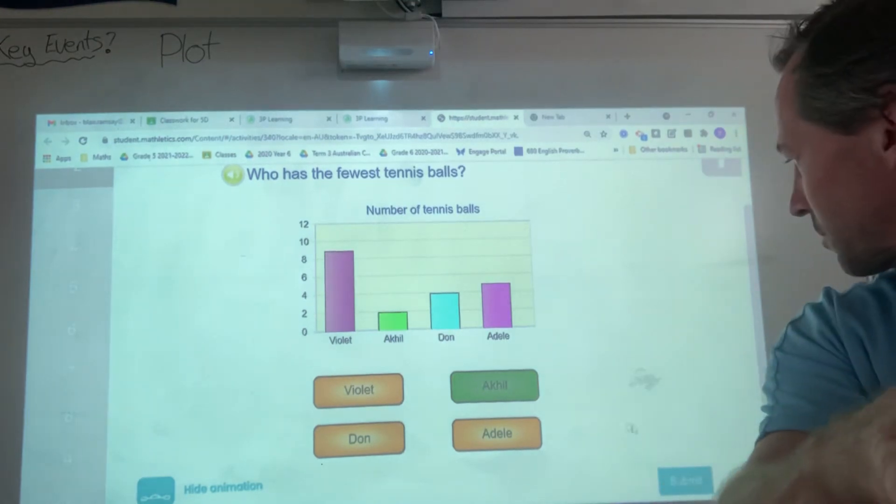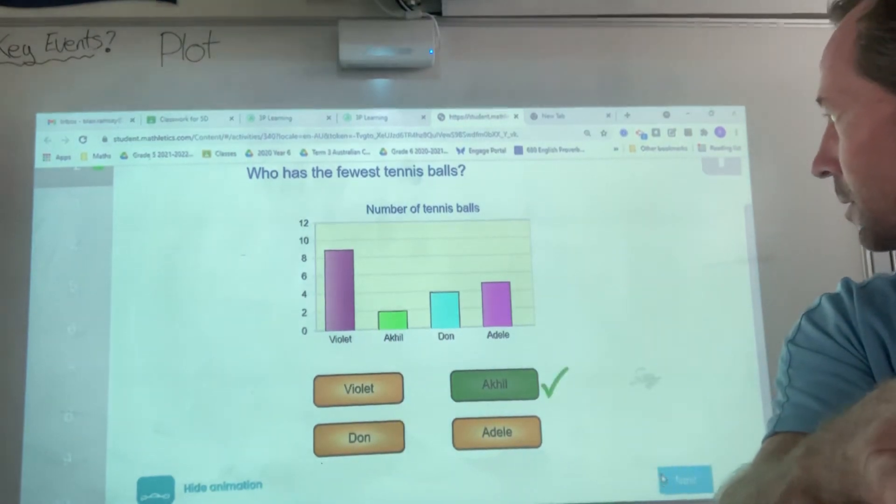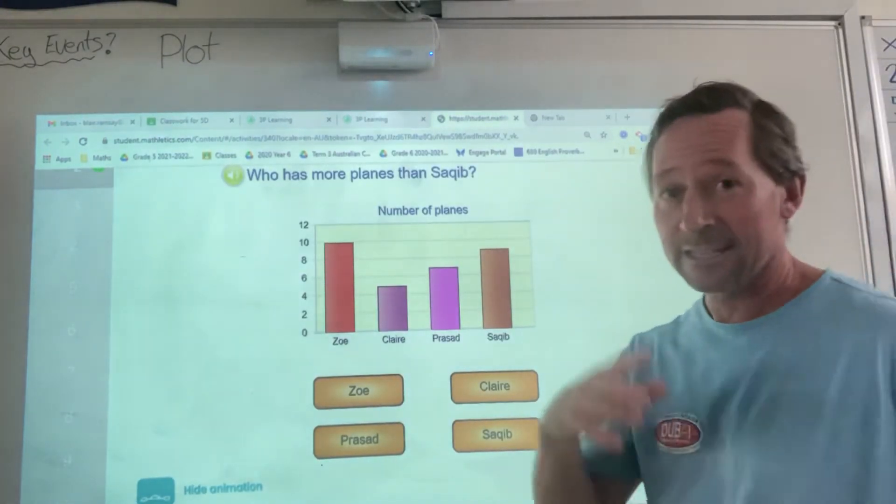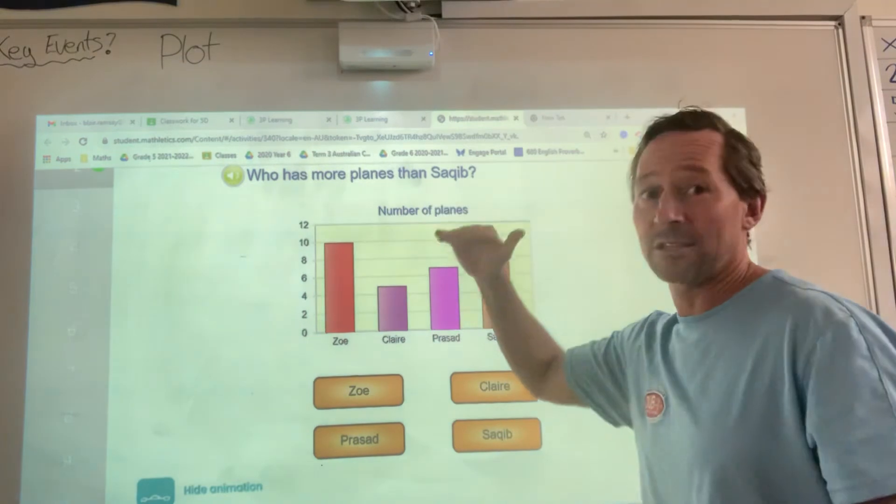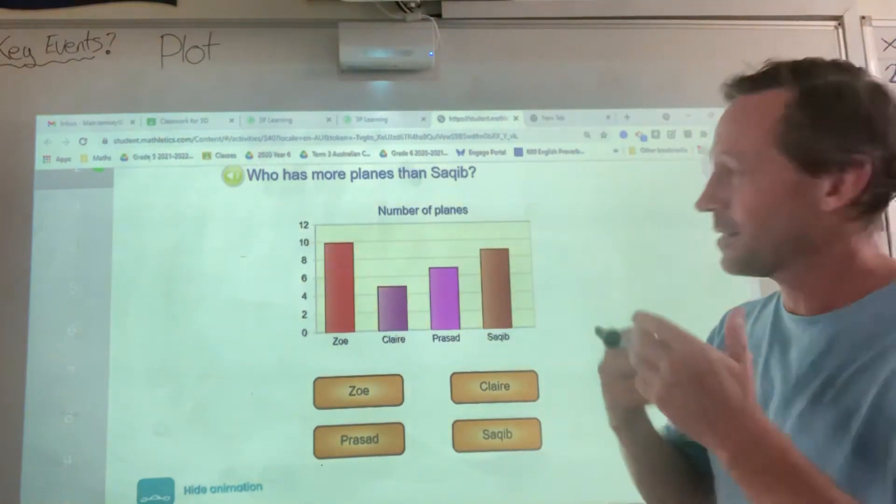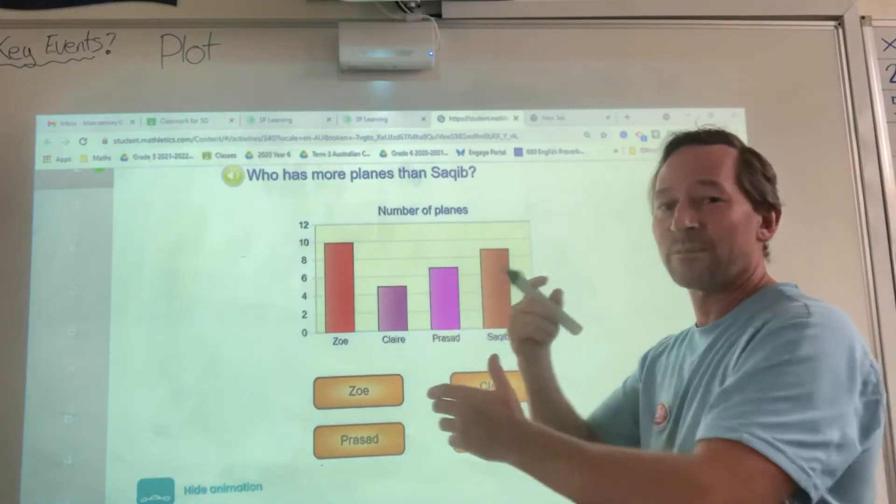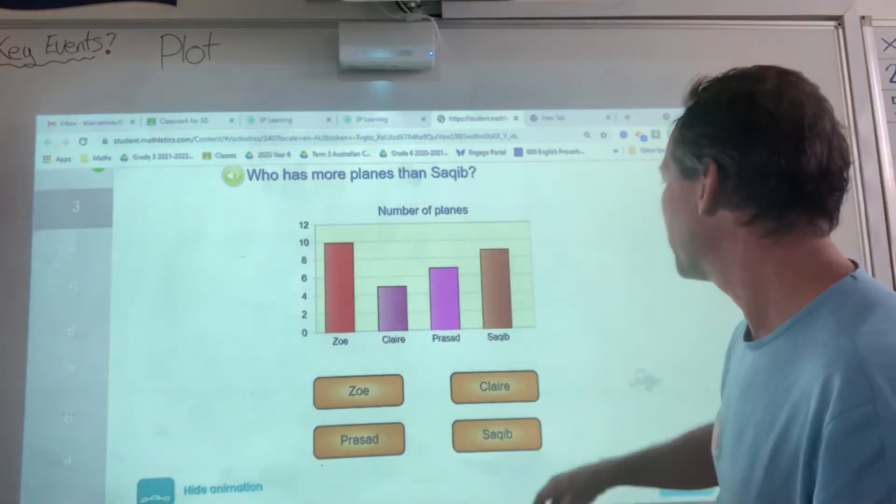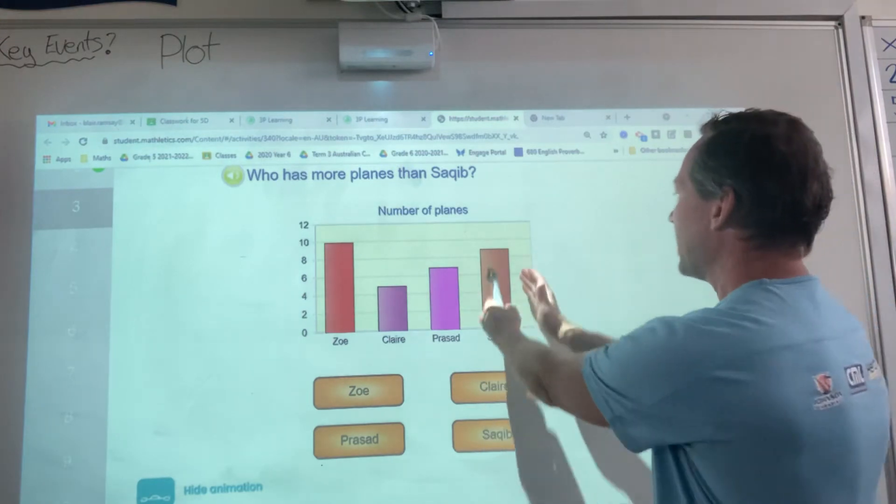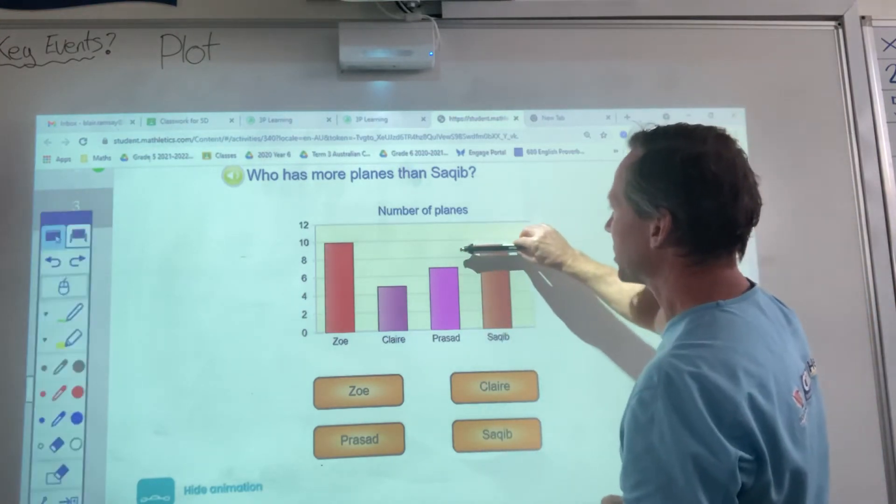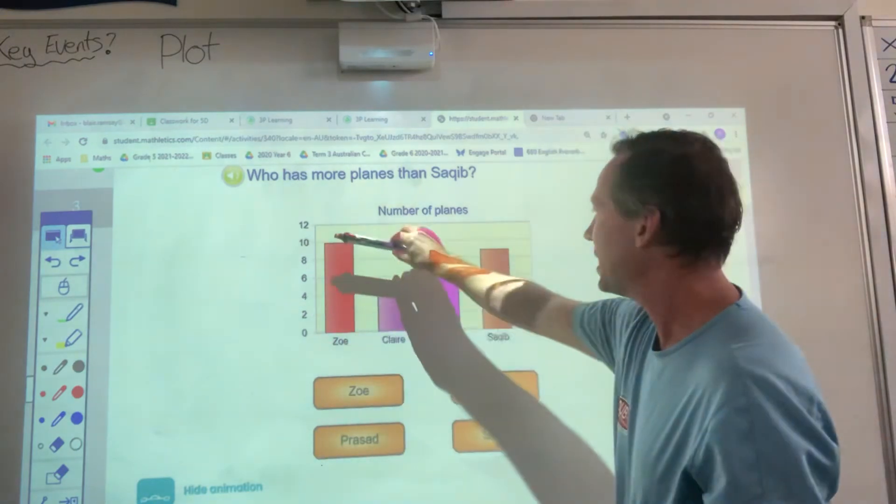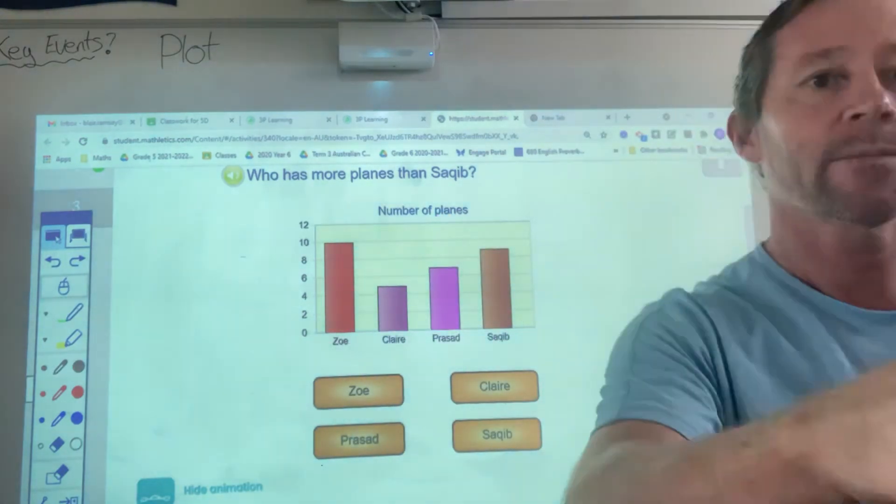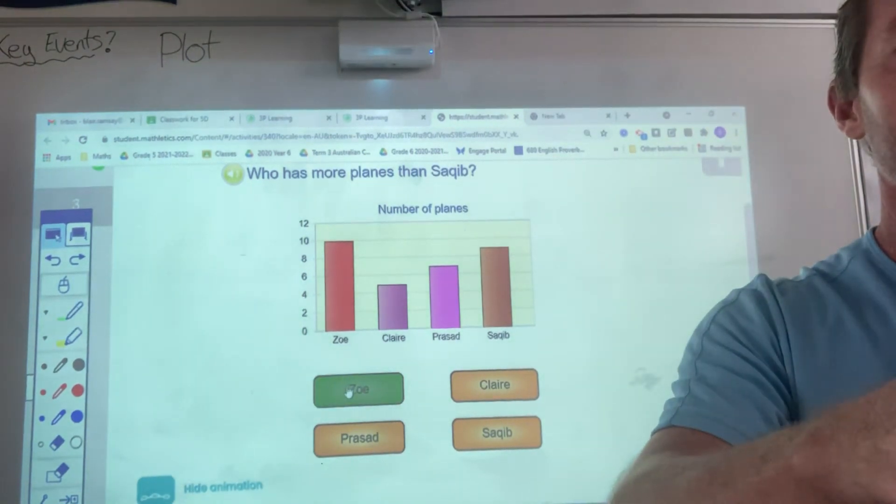Who has more planes? These are the questions where you need to read the questions, perhaps twice. Otherwise, you might think you know the question, but you're not actually reading the correct question. Who has more planes than Saqib? So, I first find Saqib is here. Pretty much go across. Clearly, it's Zoe who has 10, Saqib has 9. So, it has to be Zoe. She has one more.